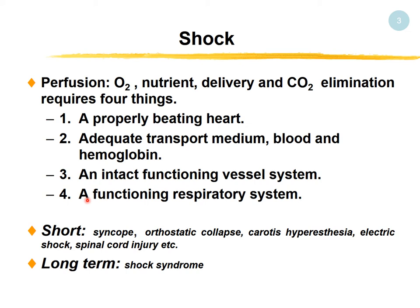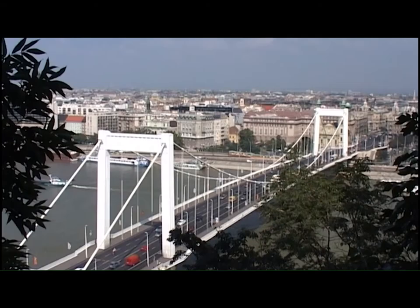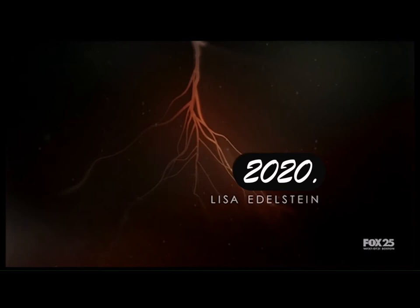We need an adequate transport medium — blood containing enough hemoglobin to bind oxygen and help remove carbon dioxide. The vessel system must be intact so whatever comes from the heart reaches the periphery and returns. The hemoglobin on the venous side should be oxygenated and eliminate the waste products. Problems with circulation can be short-term, like syncope or orthostatic collapse, or long-term, leading to the fatal shock syndrome.